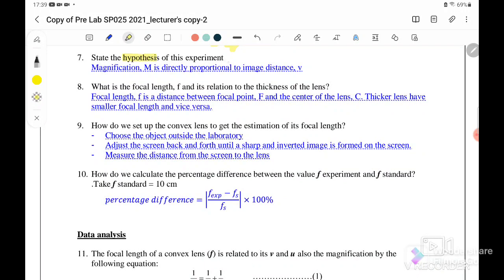Seven: state the hypothesis of this experiment. The magnification M is directly proportional to the image distance. Question eight: what is the focal length f and its relation to the thickness of the lens? Focal length is the distance between the focal point and the center of the lens. Thicker lens have smaller focal length and vice versa.